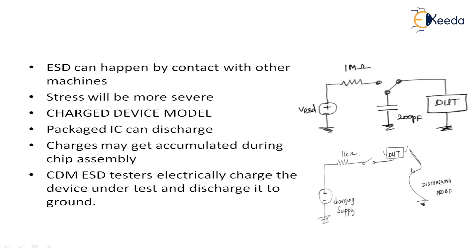Another model is called the charged device model. It can happen when a person or some other machine touches a particular IC, but even the IC itself can discharge. It may happen during chip assembly — the charges may get accumulated, and when the charges get accumulated, again there will be ESD that occurs inside the chip itself. Charged device model ESD testers are used for electrically charging the device under test, using a discharging probe and testing on the device under test.